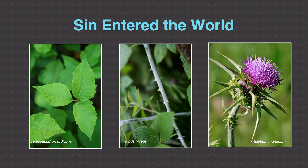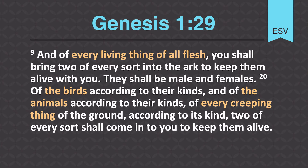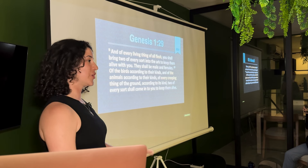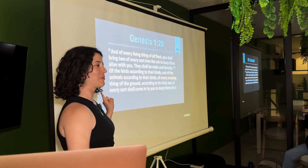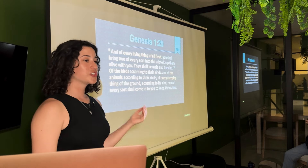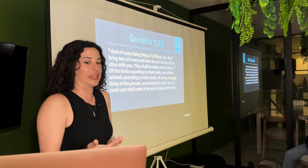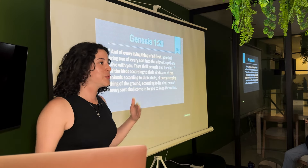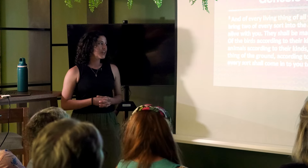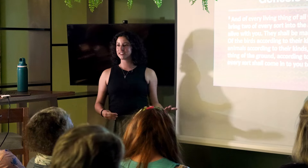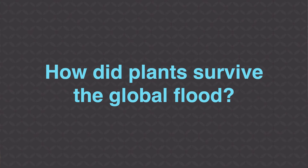The earth became very wicked and only eight humans survived the global flood. When God brought the animals on the ark — of every living thing of all flesh, two of every sort — one thing we don't see referred to is plants. Scripture doesn't tell us that God told Noah to bring plants or to collect every kind of plant. Since scripture doesn't exactly tell us, we have some ways to determine how plants survived the global flood.